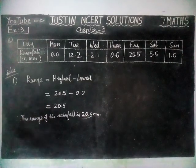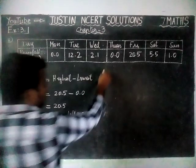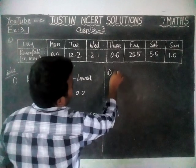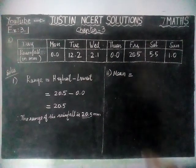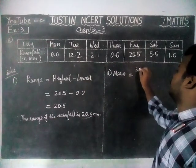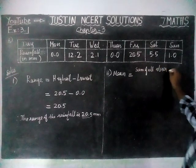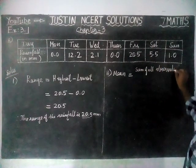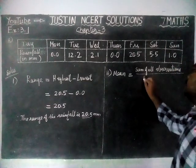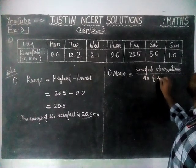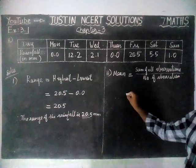Second question: we have to find the mean rainfall for the week. Mean is equal to the sum of all observations divided by the number of observations.